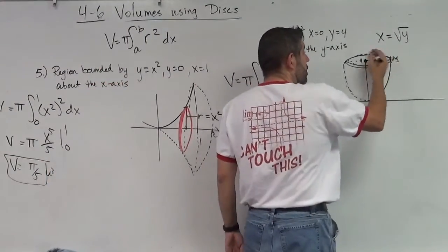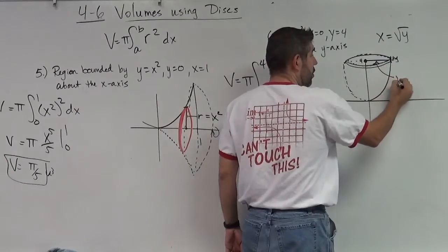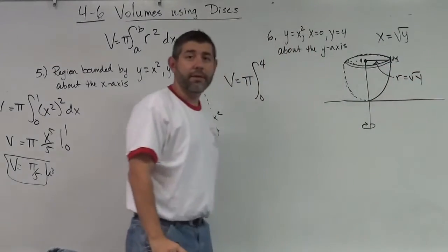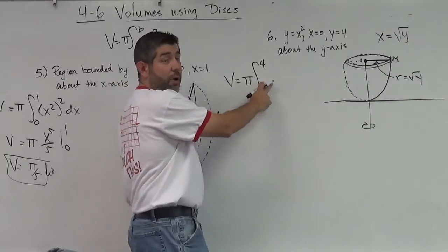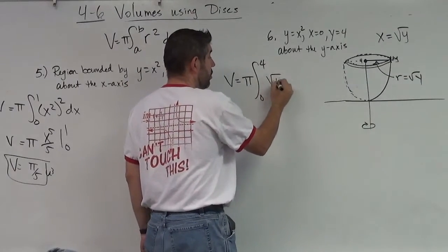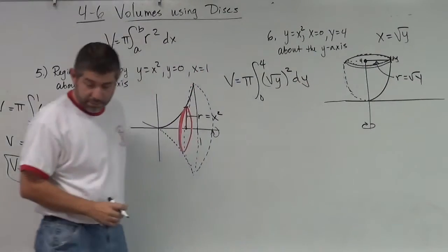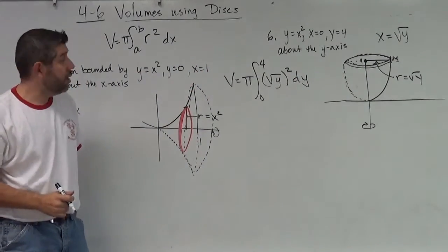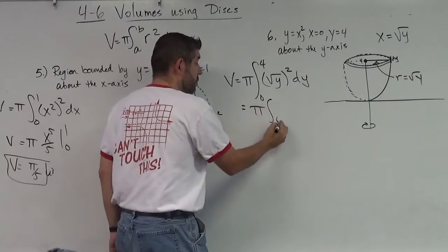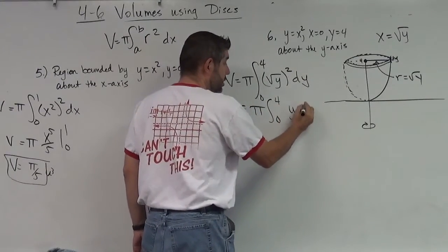So r here, r is equal to the square root of y. Okay, so r squared is the square root of y squared dy. And that's going to be my integral. So I'm going to go ahead and go pi from zero to four of y dy.